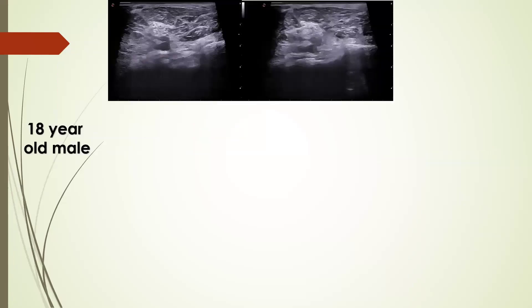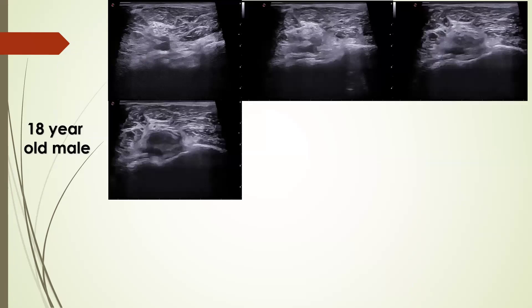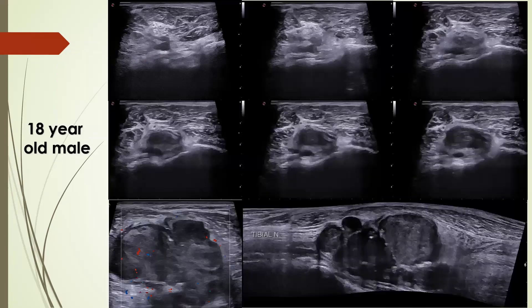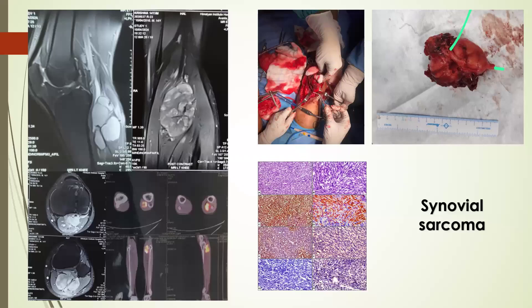In another case, an 18-year-old male had a mass in the popliteal region that was splaying the nerve fascicles of the tibial nerve, with the tibial nerve seen entering and exiting the lesion. We suspected a nerve sheath tumor, but on histopathology it turned out to be synovial sarcoma. Synovial sarcoma can be encountered around the knee joint, and the knee is quite frequently affected by synovial sarcoma compared to other joints.